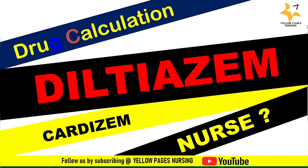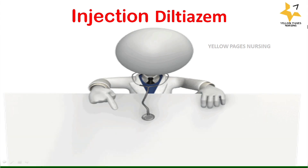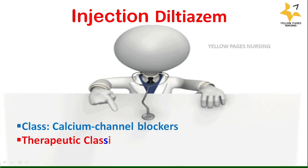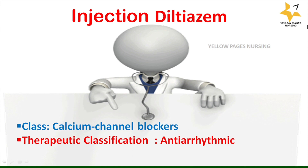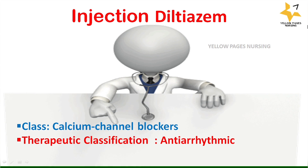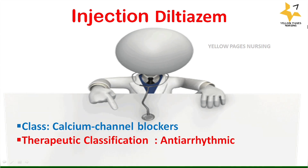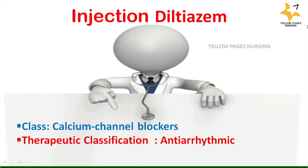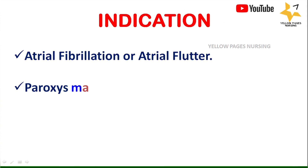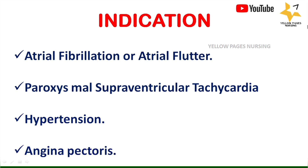Let's get into the session. What is injection diltiazem? Injection diltiazem comes under the brand name Cardizem. It comes under the class calcium channel blockers, and the therapeutic classification is anti-arrhythmic. The drug diltiazem is indicated in cases of atrial fibrillation or atrial flutter, paroxysmal supraventricular tachycardia, and hypertension.